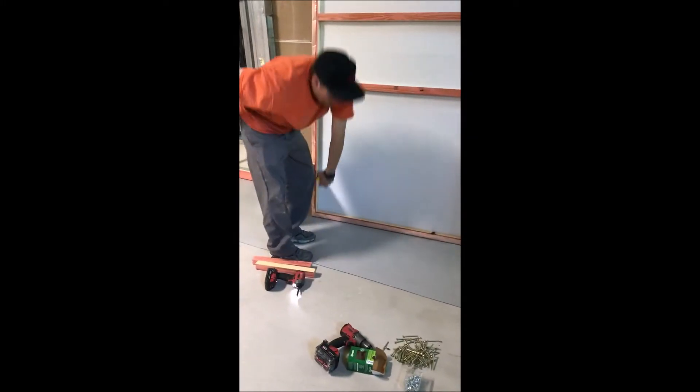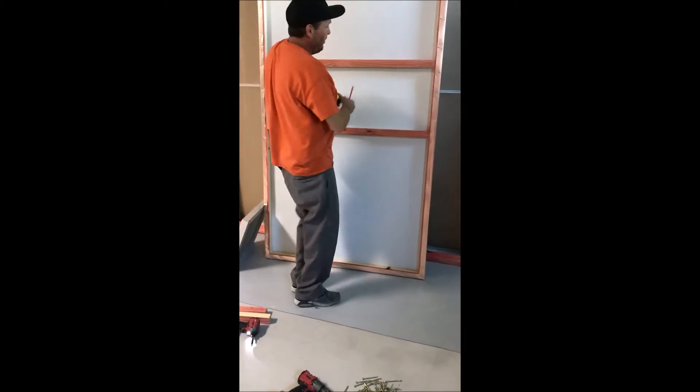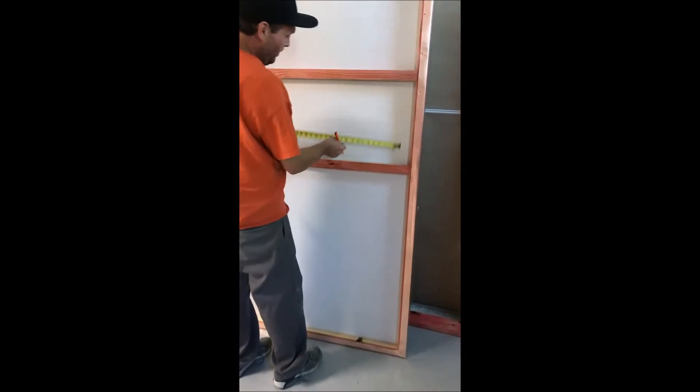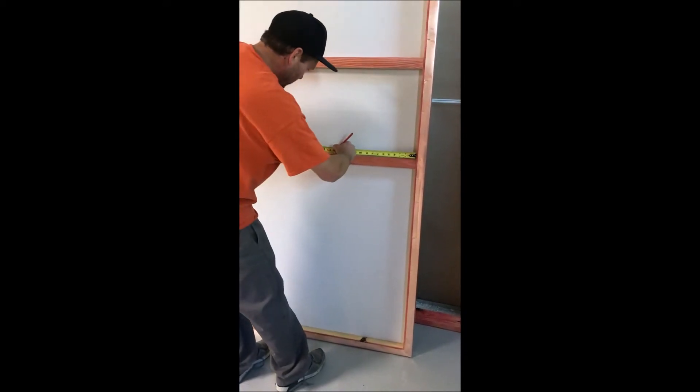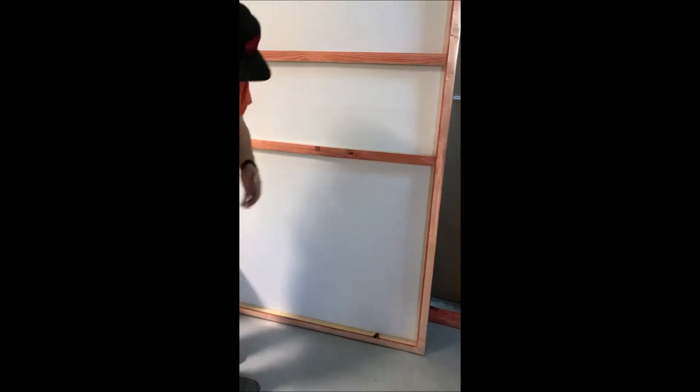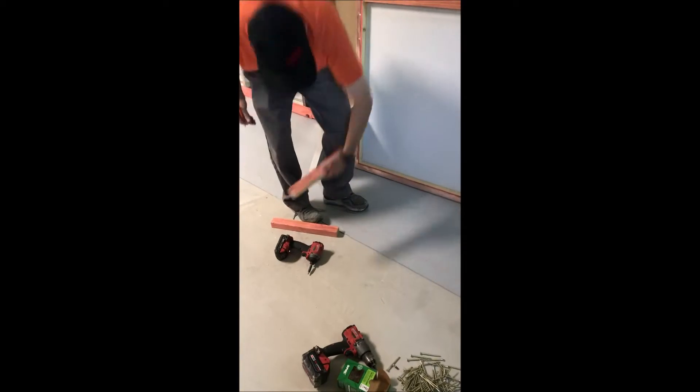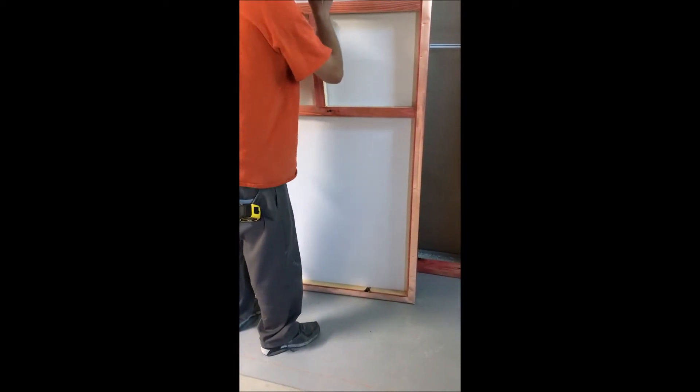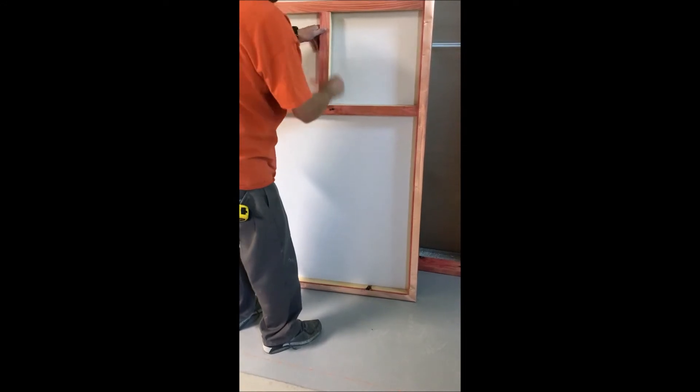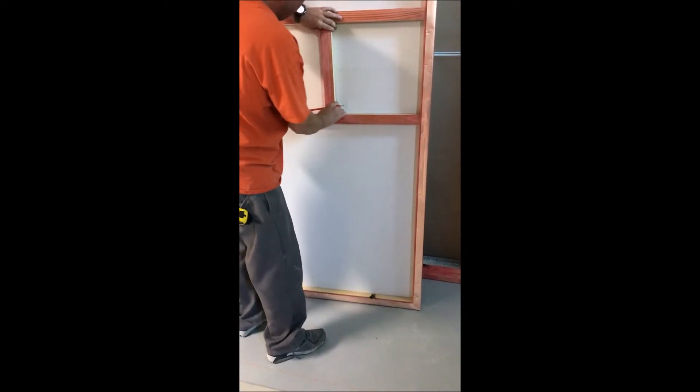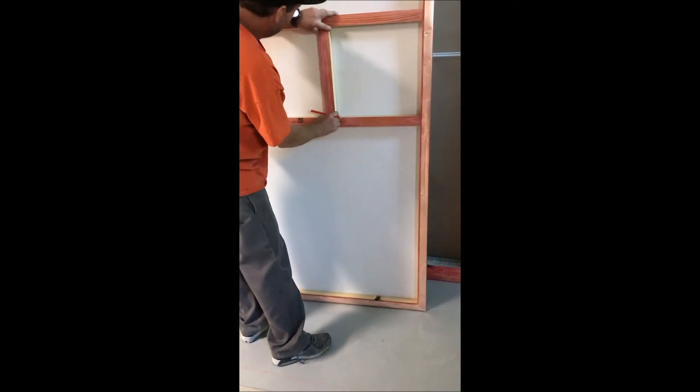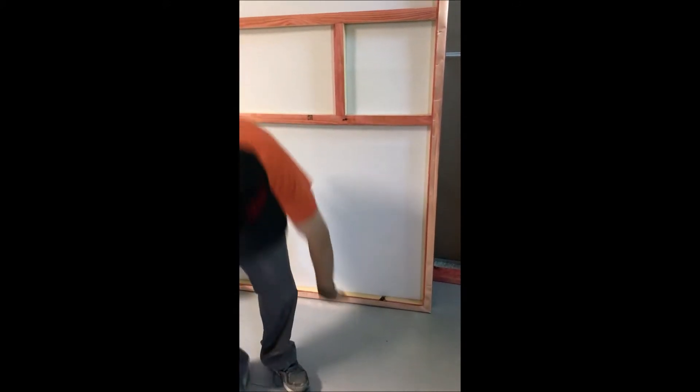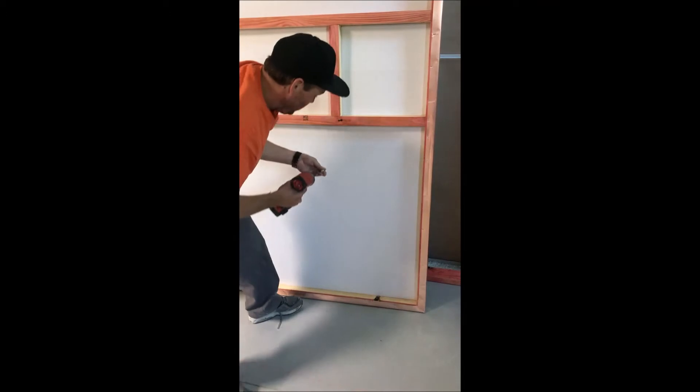And then measure over from the inside 15 inches, make a mark. 15 inches, make a mark. I've already got a pre-cut, it's a 15 inch piece, but you put it in there like so, and then drill in from the back side.